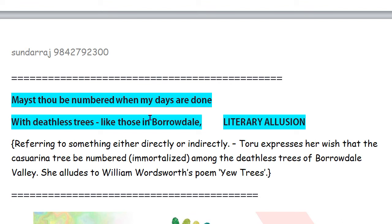May'st thou be numbered when my days are done with deathless trees like those in Borrowdale — that is a literary allusion, referring to something either directly or indirectly. Thoru expresses her wish that the Katharina tree be numbered, that is immortalized, among the deathless trees of Borrowdale valley. She alludes to William Wordsworth's poem 'Yew-Trees.' That is why it is a literary allusion.